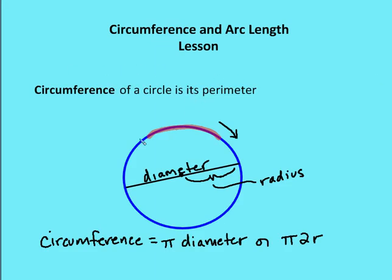The circumference of a circle is its perimeter. Most of you already know this. The distance around the circle is going to be the circumference. How do we figure that out? Someone a long time ago figured out that the circumference is equal to pi times the diameter. And since the diameter is two times the radius, a lot of people use two pi times r. The radius is half the diameter. The diameter is a length that runs across the circle and goes right through the center. So circumference equals pi times the diameter, or two times pi times the radius.